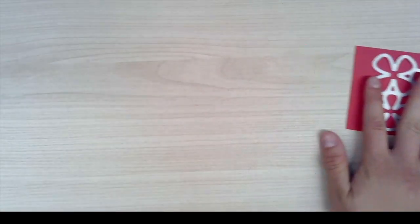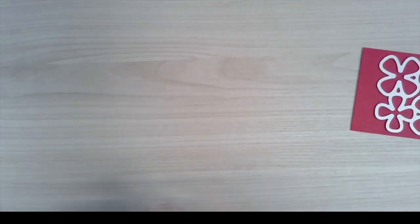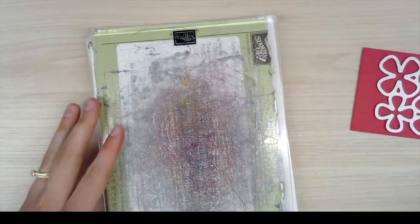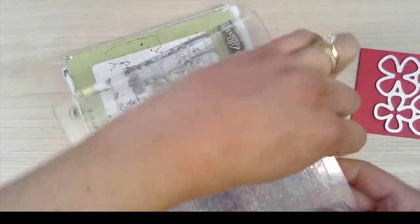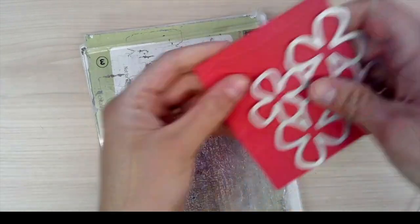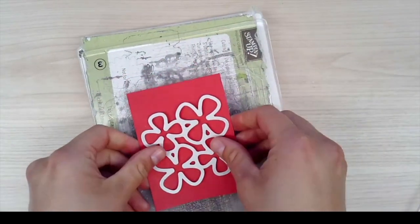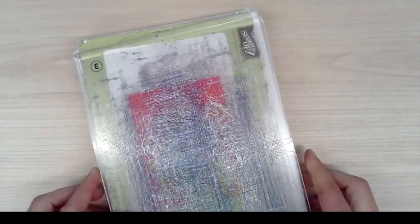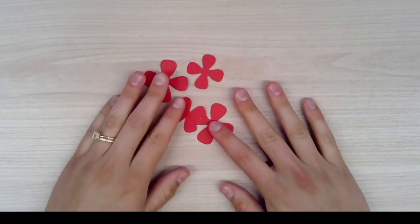So I've got some Poppy Parade cardstock and I've got my platform with my number one, number two, and number three plexiglass plates, along with my flower dies, and I'm going to run that through the die-cutting machine. When you finish you'll have your four fun little flowers here.